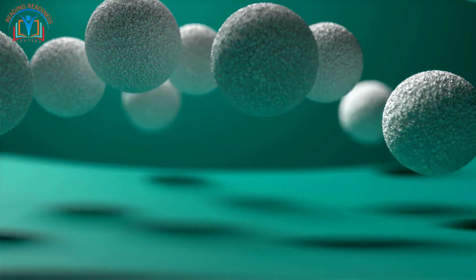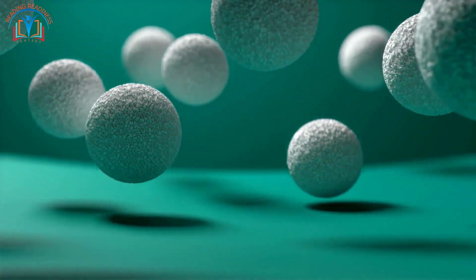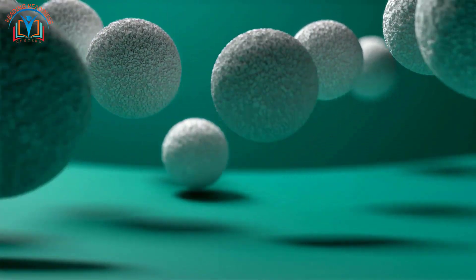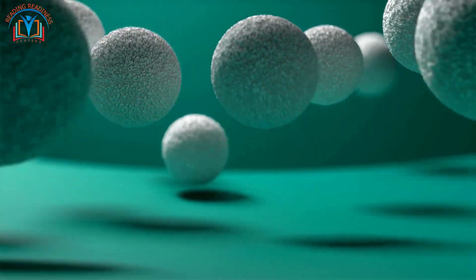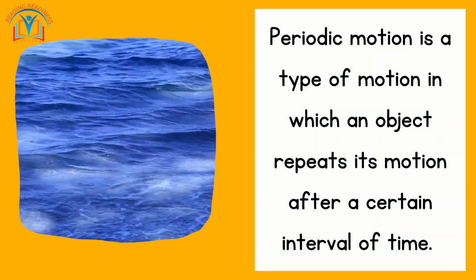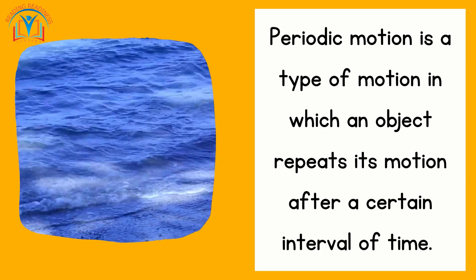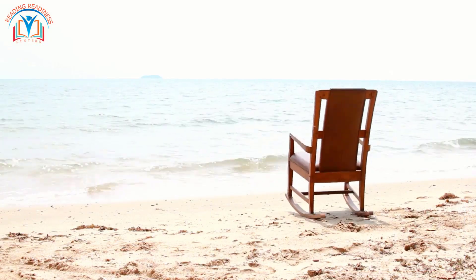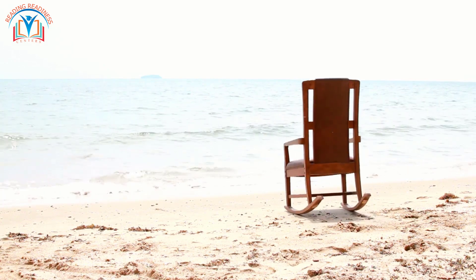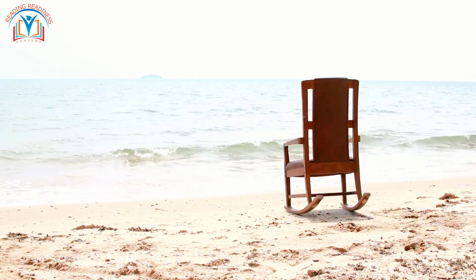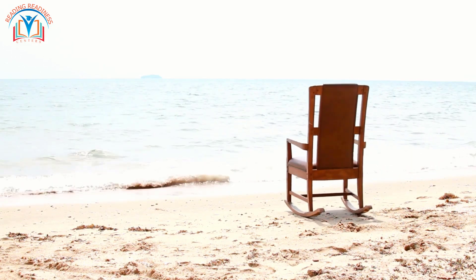Now let's discover something fascinating: periodic motion! It's like a bouncing ball — it goes up and down, up and down, in a repeating pattern. Periodic motion is a type of motion in which an object repeats its motion after a certain interval of time. It is predictable and is often caused by a force that restores the object to its original position. Examples include the vibration of a guitar string and the oscillation of a spring.